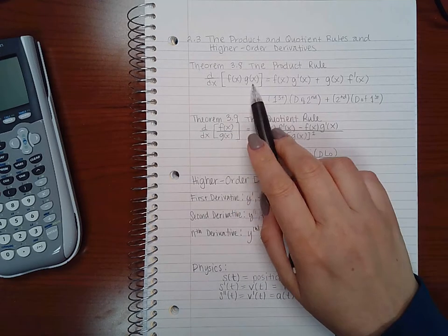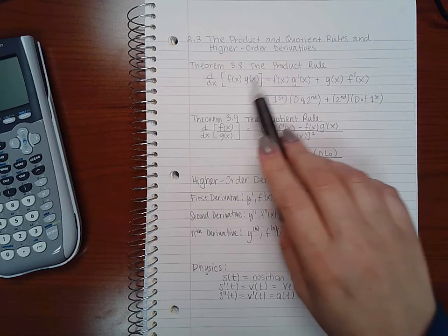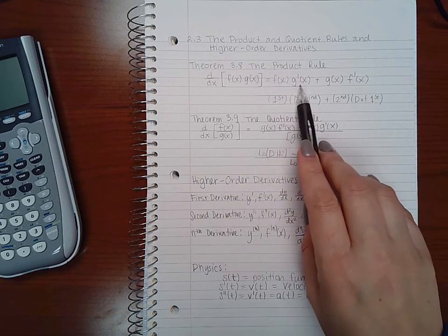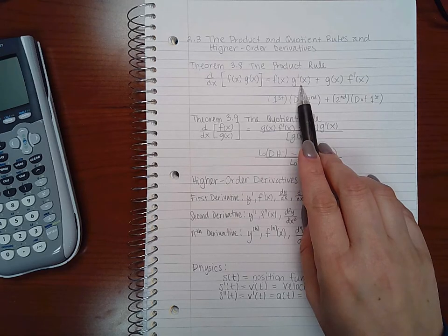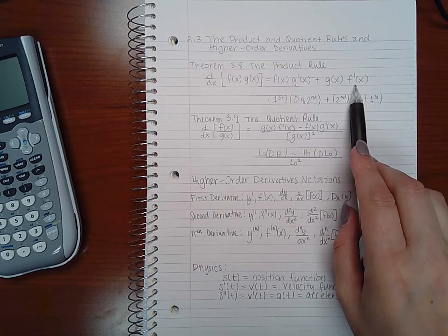It says that if you have two functions of x multiplied by each other, the way you take the derivative is using this product rule. It's the first factor times the derivative of the second factor plus the second factor times the derivative of the first.